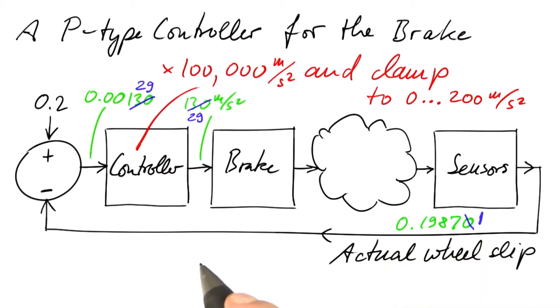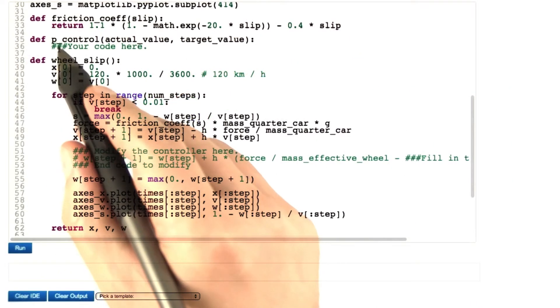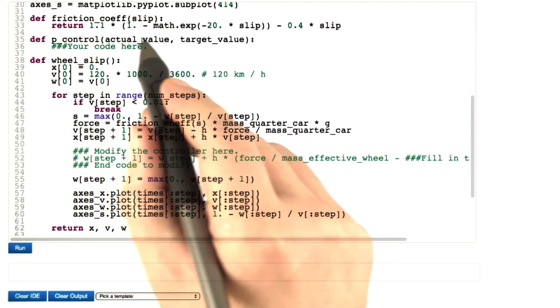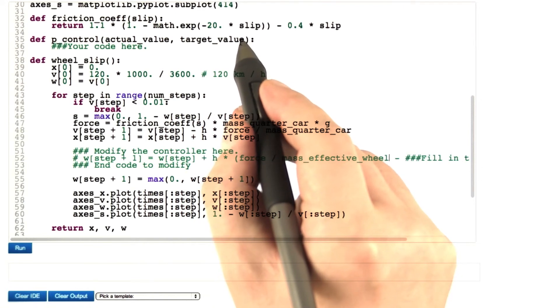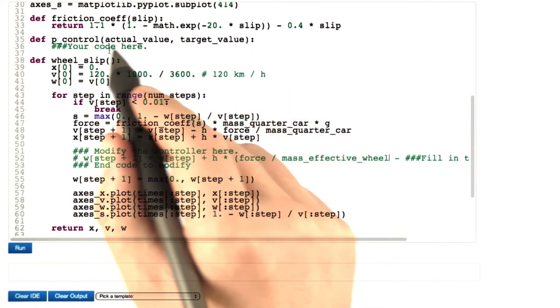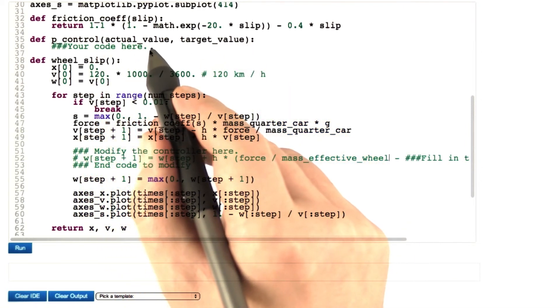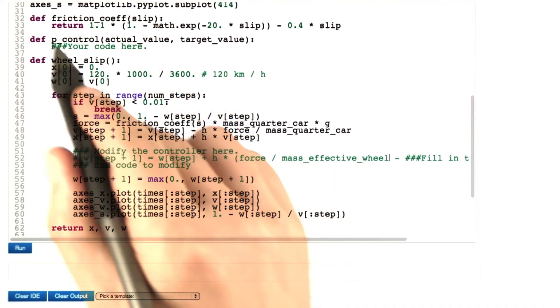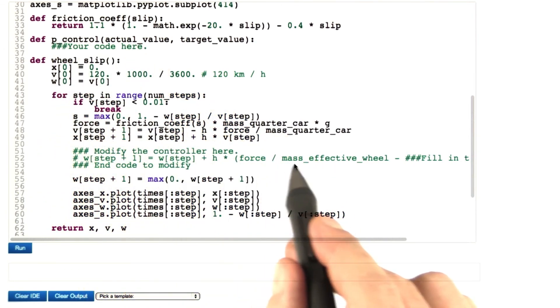Now implement this in Python. Your first job is to implement the P-control as a function. The function receives the actual value and the target value, 0.2 that is, and returns the output of the P-control, which eventually controls the brake. Your second job is to call that function to control the brake.